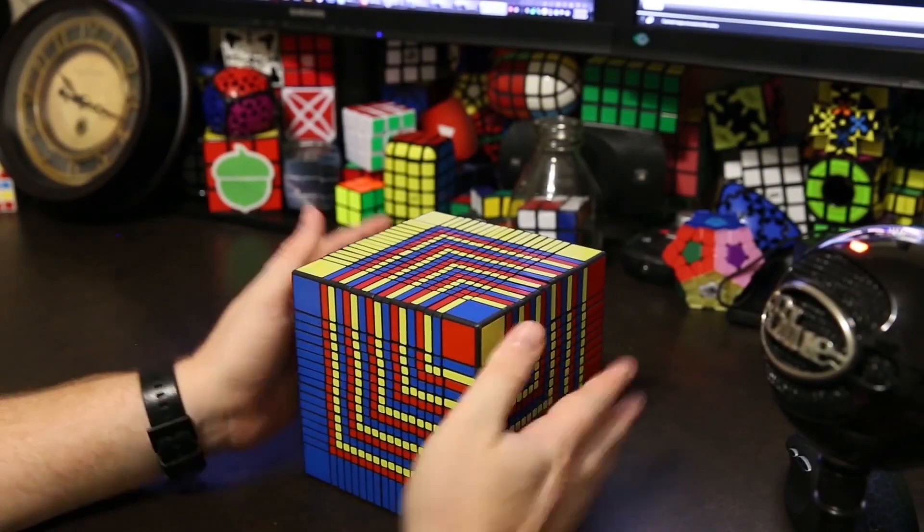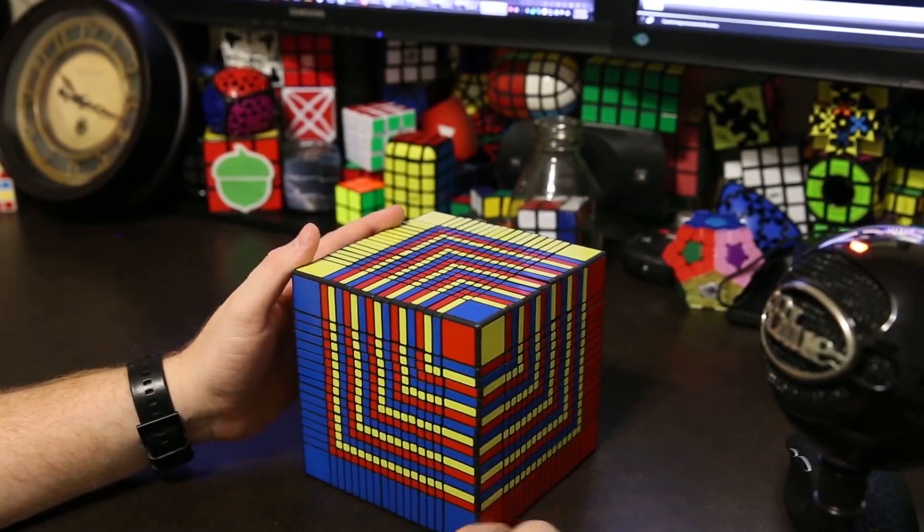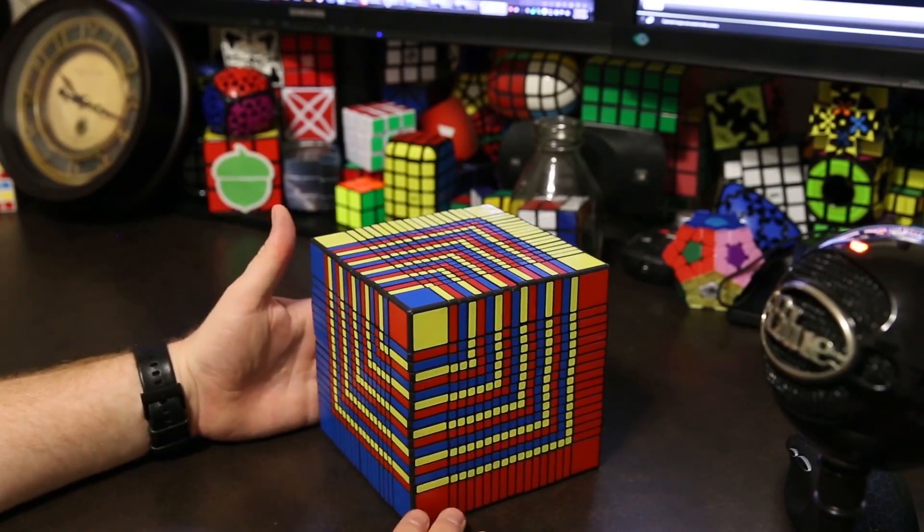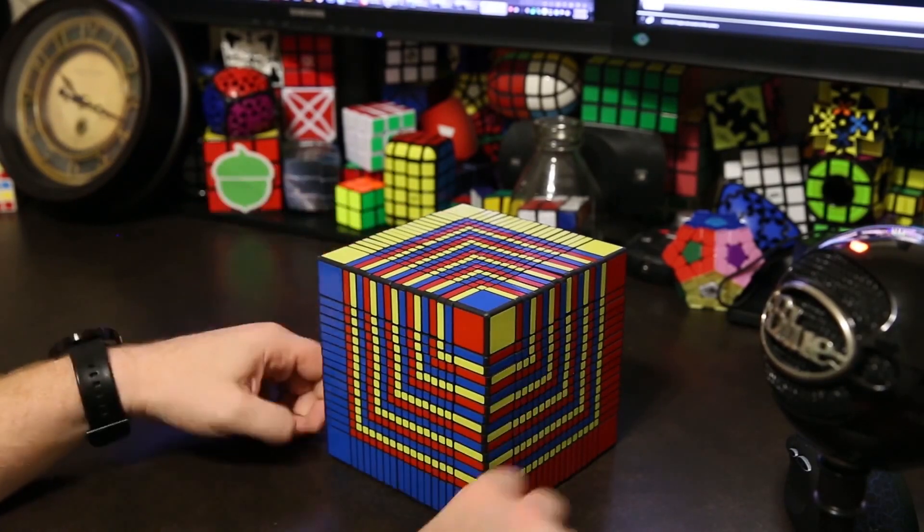What's up YouTube? My name is Kenneth. Today I'm going to solve the 17x17x17 world record largest Rubik's Cube type puzzle, the Over the Top Cube by Oscar van Deventer.